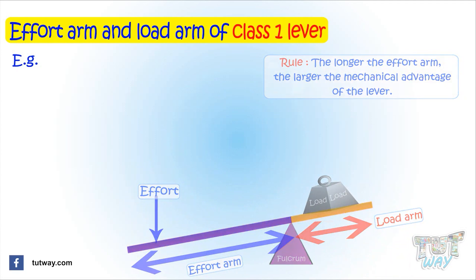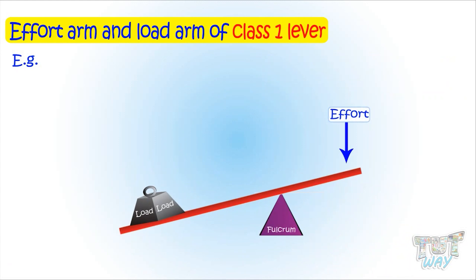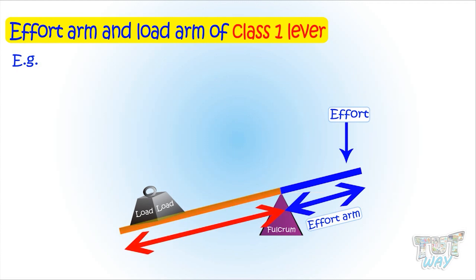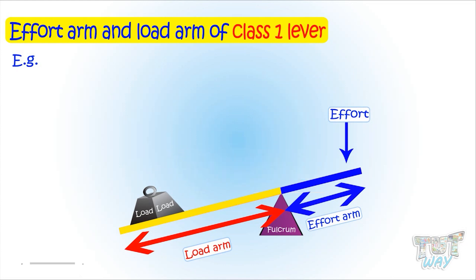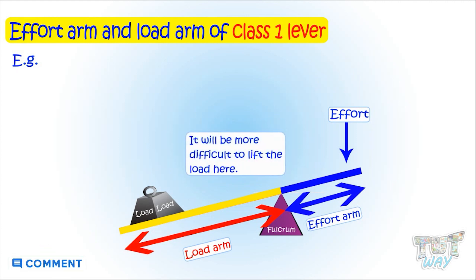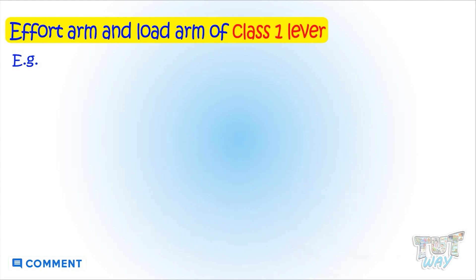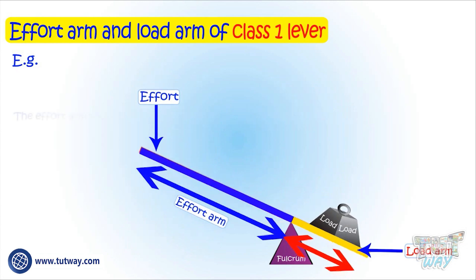Here is one more example — another class 1 lever. The effort arm is the distance between the fulcrum and the effort, and the load arm is the distance between the load and the fulcrum. You can clearly see that the load arm is bigger than the effort arm. So according to the rule, it will not give any mechanical advantage. Rather, it will be more difficult to lift the load. So the effort arm should be longer for getting the work done easily.